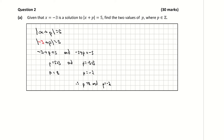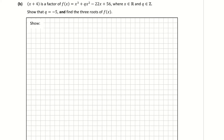You can verify your answer by subbing in 8 into x plus p, and you should get 5 and negative 5. Okay, that is part A. Scrolling on down now to part B. So part B: x plus 4 is a factor of f of x, where x is an element of the reals and q is an element of z, the integers. Show that q is equal to minus 5, and then find the 3 roots of f of x.